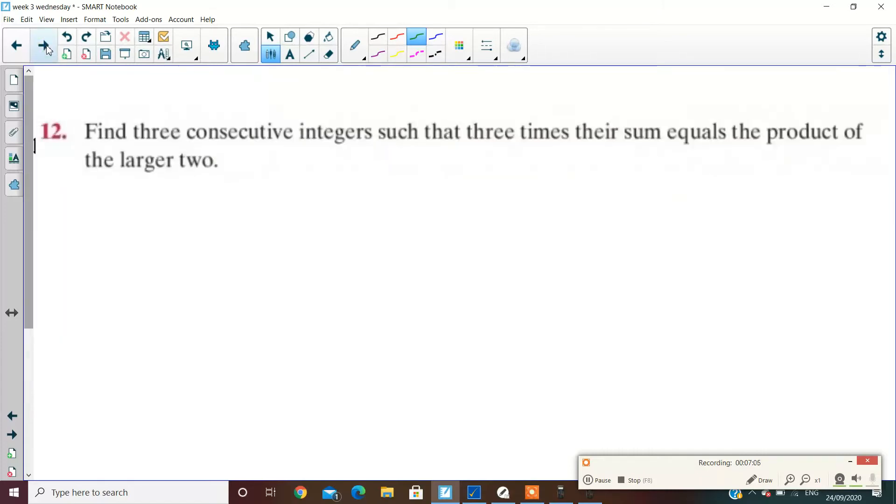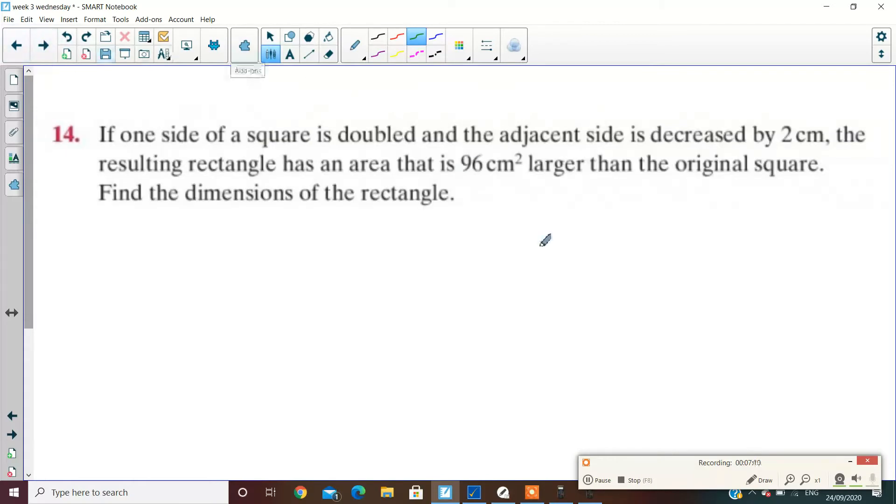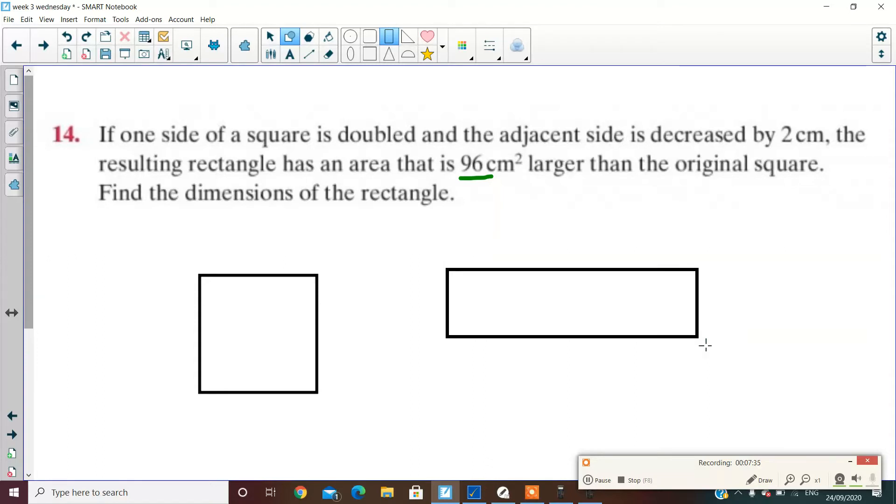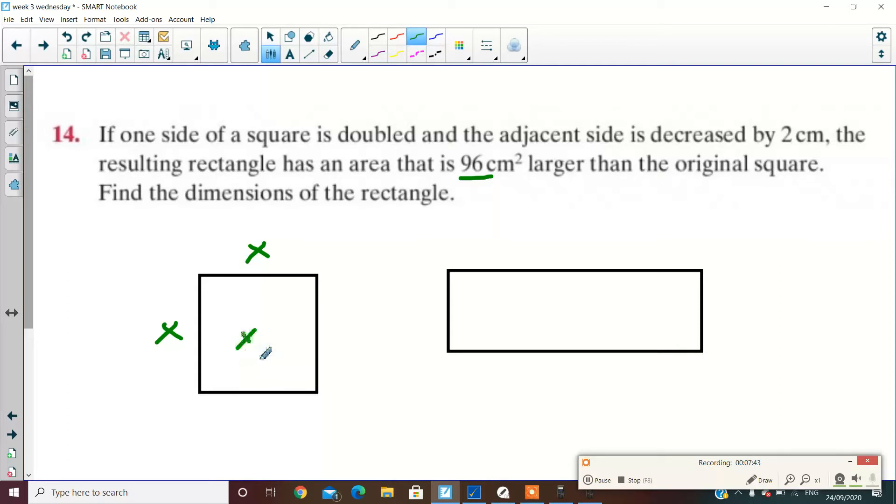All right now, this is going to be easy. All right, got it. Number 14: if one side of a square is doubled and the adjacent side is decreased by 2, the resulting rectangle has an area of 96 centimeters larger than the original square. Find the dimensions of the rectangle. So you have a square, and then you double the length of one of them, so I'll double the length of the length, and then I'll decrease the other one by 2. So this is x times x. The original square is x squared. The other one gets doubled to 2x, but the width is now x minus 2. What's the area of the second one then? It's 2x by x minus 2, which will be 2x squared minus 4x.